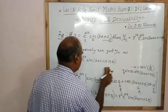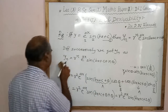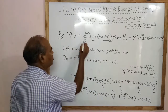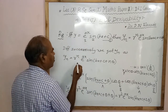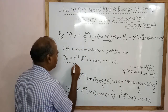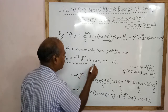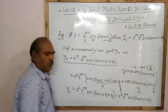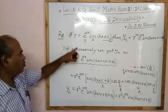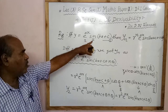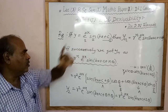This is the formula for the nth derivative of the function e to the power x times sin(bx+c). Similarly, we can prove the formula for e to the power x times cos(bx+c).